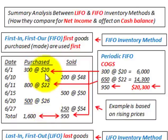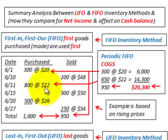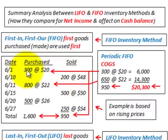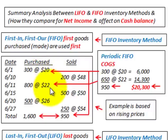Our purchases in this example are going to have rising prices, and we also have rising prices for sales. We're going to look at the basic difference between LIFO and FIFO inventories and how we generate our cost of goods sold from our sales.